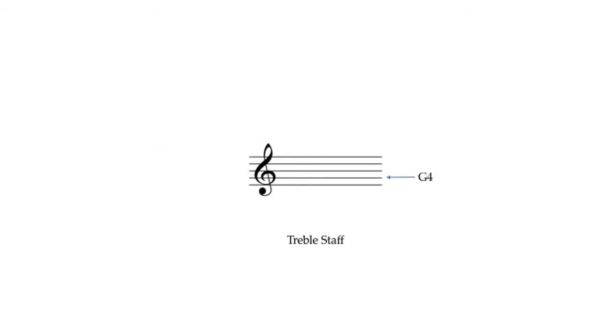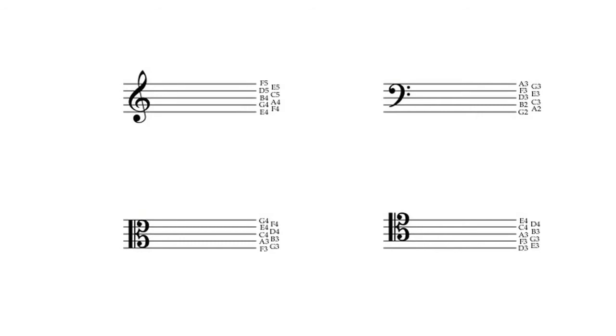The most common staves in use in modern music are the treble staff, which uses a G clef to place the pitch G4 on the second line of the staff. The bass staff, which uses the F clef to place the pitch F3 on the fourth line. The alto staff, which places the pitch C4 on the third or middle line. And the tenor staff, which places the pitch C4 on the fourth line. The treble staff and the bass staff are by far the more commonly used staves, but there are some instruments that read on the other staves.